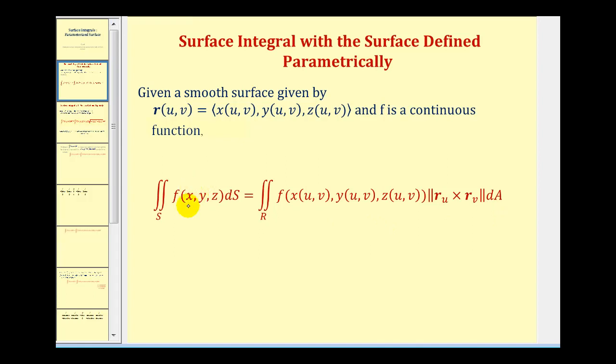If we write the function f by replacing x with x of u and v, y with y of u and v, and z with z of u and v, differential s is equal to the magnitude of this cross product differential a, where differential a is either du dv or dv du.